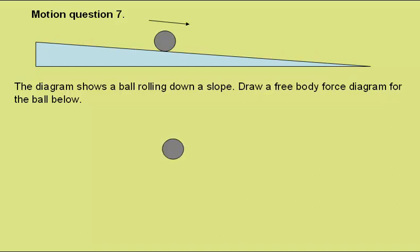So we're given a picture of the ball and we need to add on the weight acting down, the friction which will be acting up the slope against the direction of motion, and the reaction force or normal contact force acting at 90 degrees to the slope.